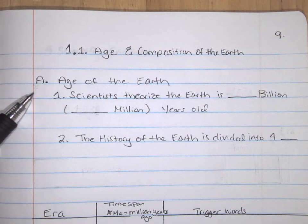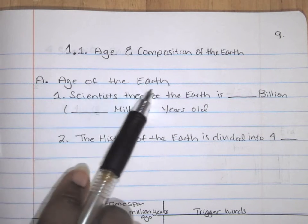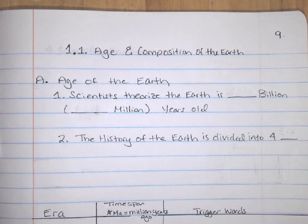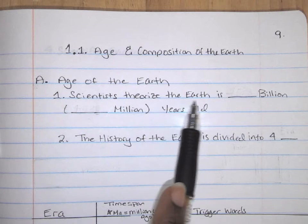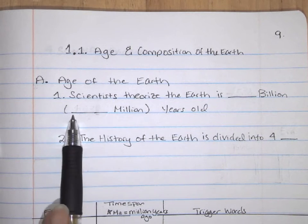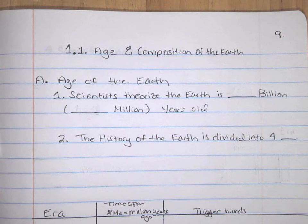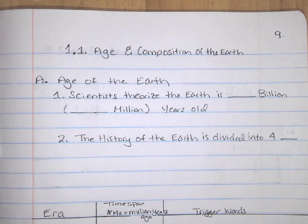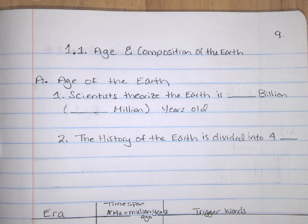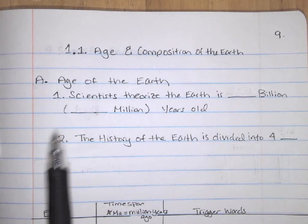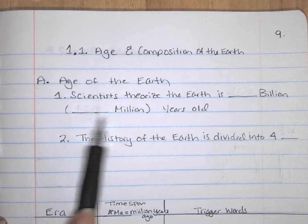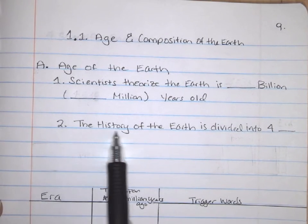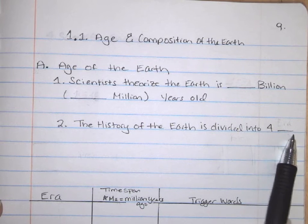The next thing you're going to do is start your first section: Age of the Earth. For age of the earth, write 'Scientists theorize the earth is ___ billion (___ million) years old.' Notice there are blanks — you'll fill those in using the information from the lesson. The second part says 'History of the earth is divided into four ___.' Leave that blank too; I'll show you where to get that information.